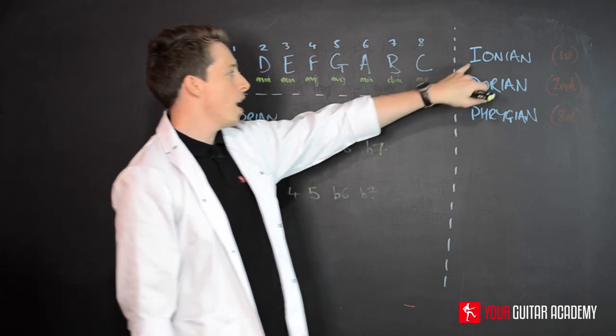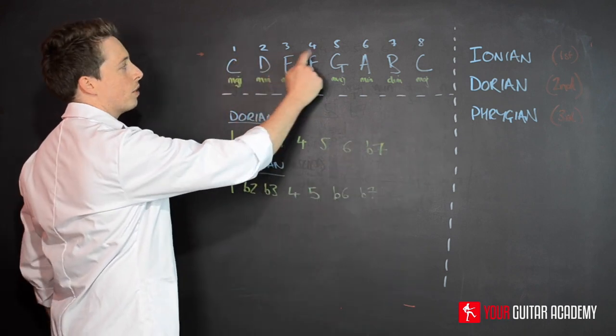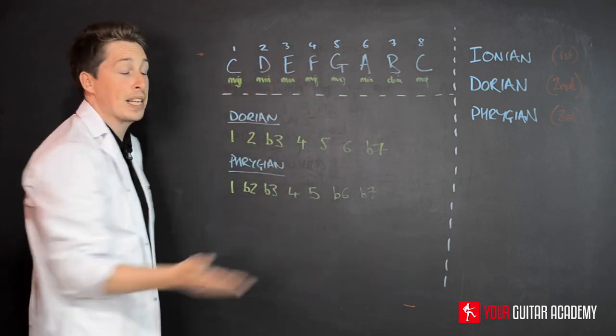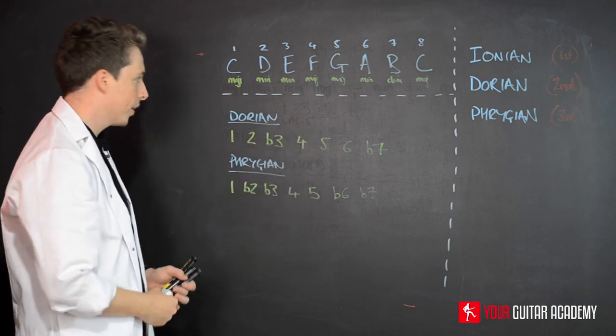Remember that we originally did Ionian, and the Ionian is just simply 1, 2, 3, 4, 5, 6, 7, 8 - it's just the basic major scale. We didn't write it down here.